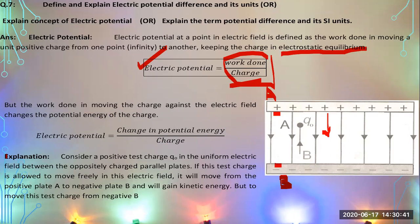Consider a positive test charge q-naught in a uniform electric field between two oppositely charged plates. We are trying to move this charge particle against the electric lines of force — against the electric field and toward the positive plate. You need to overcome the repulsive force, so you have to do some work. That work done changes the potential energy of the charge particle. If allowed to move freely, the charge moves from positive plate A to negative plate B and gains kinetic energy.